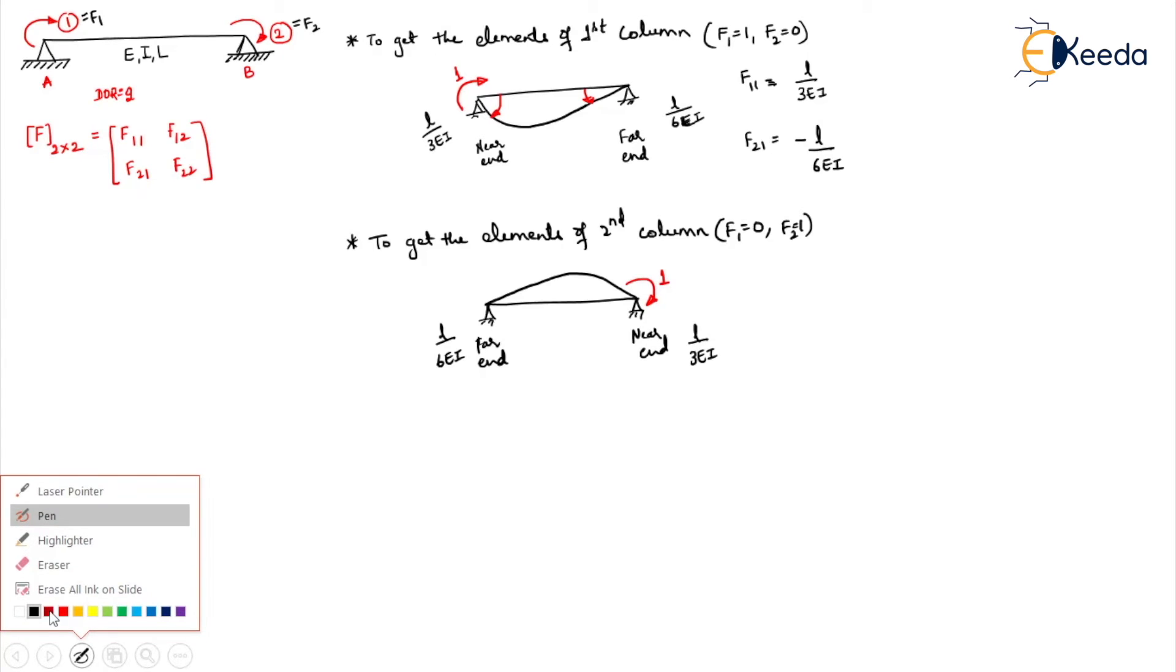Now for the directions, what you should do? From the horizontal to the deflected shape, so this will be your directions. Now you write the flexibility elements. F1,2 and F2,2. F1,2 is the first coordinate, this is clockwise whereas this is doing anticlockwise, so it is minus L by 6EI. Coming to this, here this is clockwise and here this is also doing clockwise, so it will be L by 3EI.